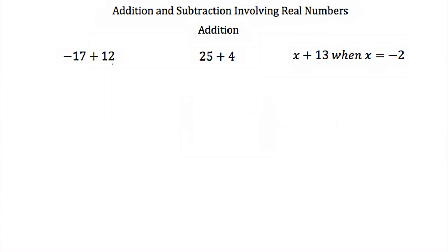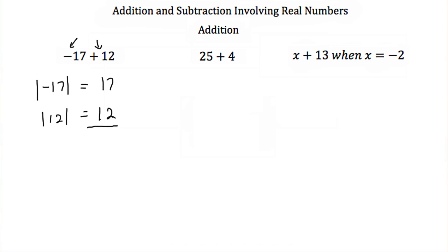Here we have negative 17 plus 12. They have different signs, so we subtract their absolute values. The absolute value of negative 17 is 17, and the absolute value of 12 is 12. We subtract these and get 5. But the largest absolute value — the 17 — comes from a negative number, so this 5 is really negative 5.